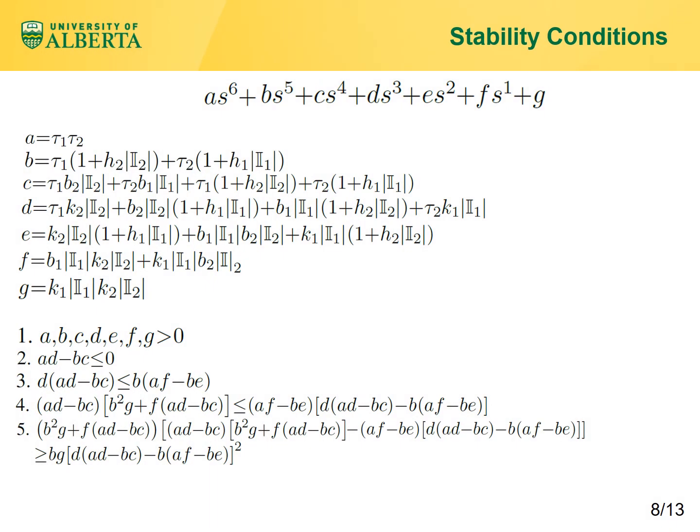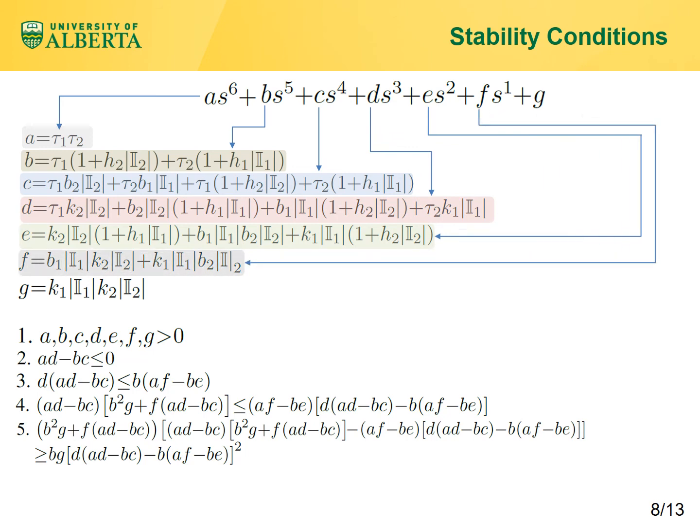If the first follower doesn't receive information from the second follower or vice versa, the coefficients will be simplified. To have negative eigenvalues for the system matrix or negative roots for this characteristic polynomial, the following relations should be satisfied: relation 1, relation 2, relation 3, relation 4, and finally relation 5.